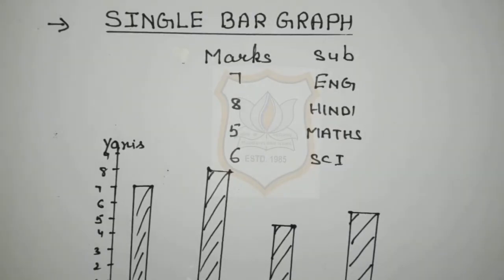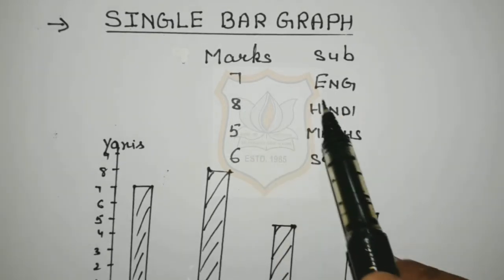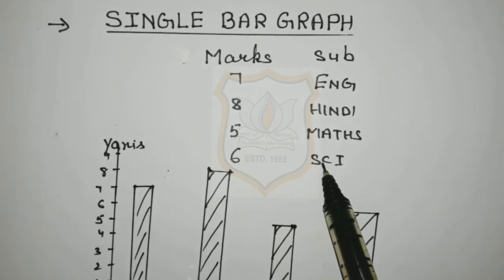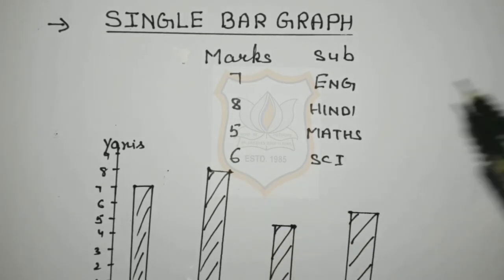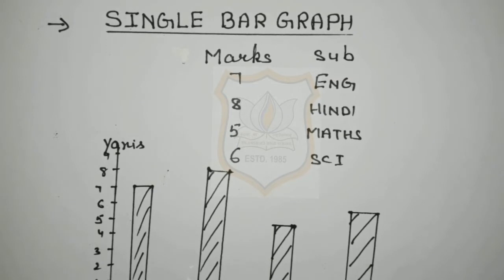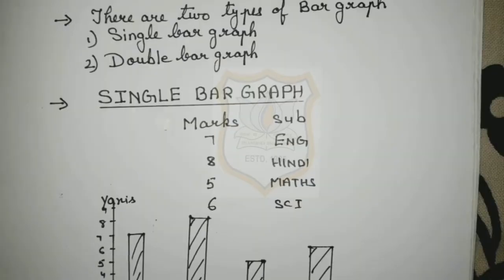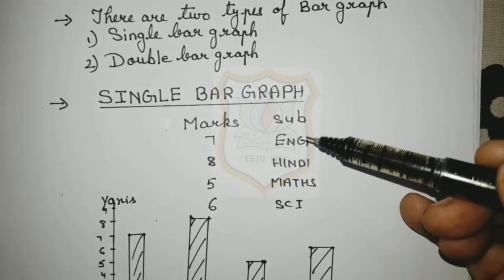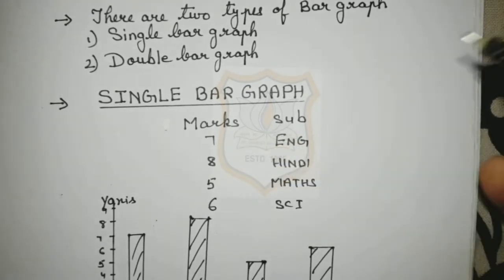Let's suppose marks of a student are given in different subjects out of 10. In English he got 7 marks, in Hindi he got 8 marks, in Maths he got 5 marks, and in Science he got 6 marks. Now I will tell you how you can represent these marks in the form of a bar graph. In the given data we have two things — subject and marks — and we will represent these on a bar graph.